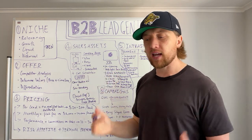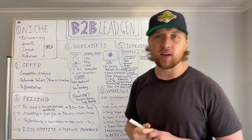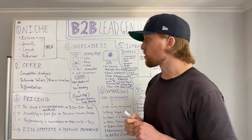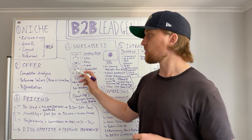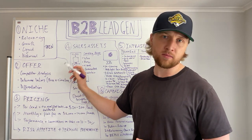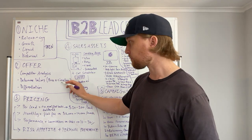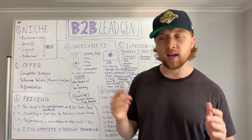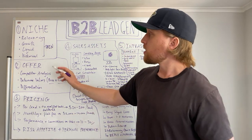Number two is your offer. The first thing you need to do is competitor analysis. Don't try to reinvent the wheel — chances are if there are competitors in the industry, there's cash flow. The quickest way to cash flow is to mimic what they are doing. Look at their timelines and price points and use those as north stars for creating your own offer.